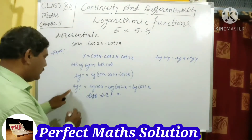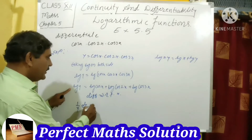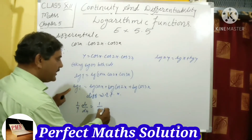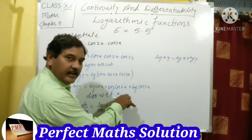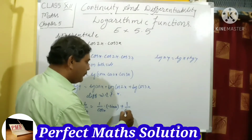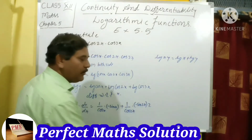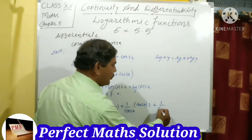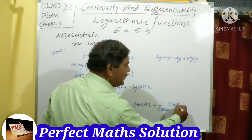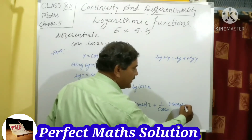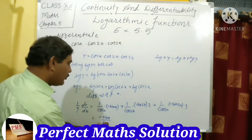Now differentiate with respect to x. The derivative of log y is 1/y · dy/dx. This equals 1/cos x · (−sin x), plus the derivative of log cos 2x which is 1/cos 2x · (−sin 2x) · 2, plus the derivative of log cos 3x which is 1/cos 3x · (−sin 3x) · 3.